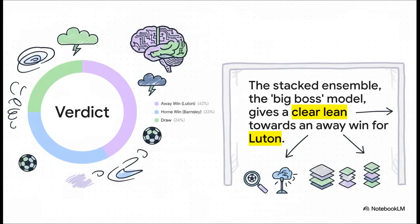And that harmony gets a big thumbs up from the master model, the stacked ensemble, which pretty much acts as the final judge. It listens to all the other models, it weighs their predictions, and then it makes the final call. And its verdict, a clear, maybe not overwhelming, but a definite lean towards an away win for Luton. It's like all the models are whispering the same secret. Luton's got the edge here.